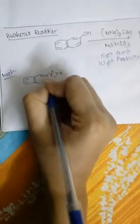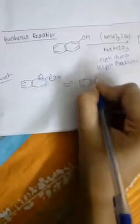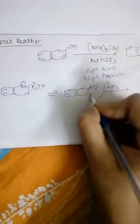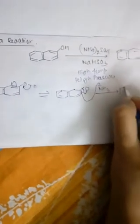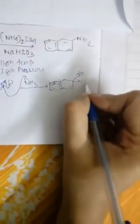The reaction mechanism begins with keto-enol tautomerism occurring first, so the OH forms a double-bonded O (ketone form). Then NH3, coming from (NH4)2SO3, attacks the carbonyl carbon.